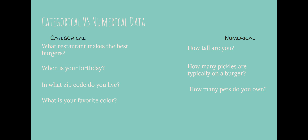All right, in general, when you are trying to determine if a question is going to result in categorical or numerical data, just answer the question yourself. If you respond with words, it's categorical. If you respond with numbers, it's numerical. And that's it for categorical and numerical data.